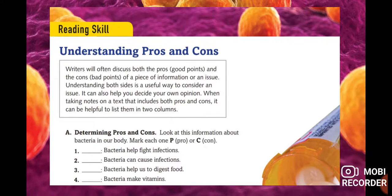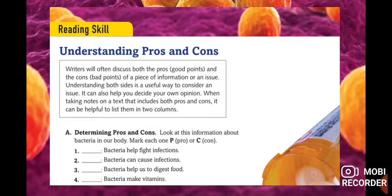Now we look at the reading skill: understanding pros and cons. Writers often discuss both pros — the good points — and cons — the bad points — of an issue. Understanding both sides is a useful way to consider an issue and can help you decide your own opinion. When taking notes, it can be helpful to list pros and cons in columns — draw a chart with pros on the left and cons on the right.